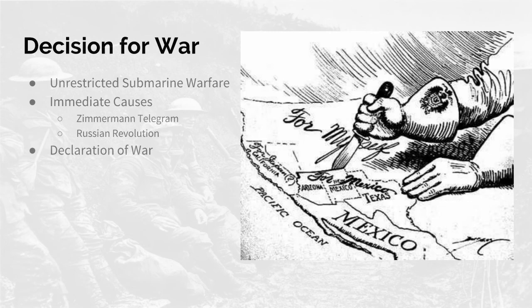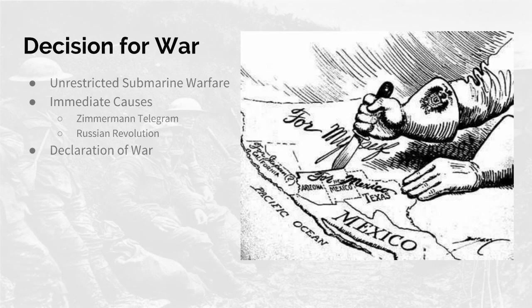Another reason for immediate entry into the war was the Russian Revolution. Wilson wasn't about being an ally with an autocratic Russian leader — meaning a dictator. When the Russian Revolution happened and Russia became a republic, he no longer had a reason not to enter with the Allies. A few months later in November they became a communist country. Declaration of war: Germans started sinking U.S. ships again. On April 2nd, 1917, the U.S. went to war, and the majority of Americans supported it.